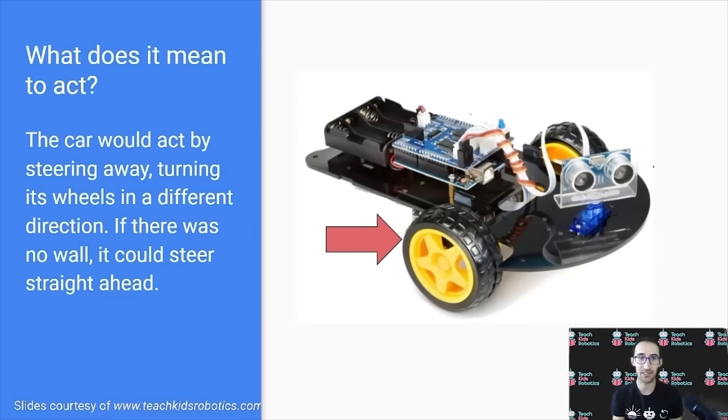So, the car would act by steering away, turning its wheels in a different direction electronically, and if there was no wall, it could continue steering straight ahead.